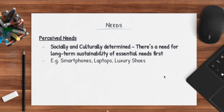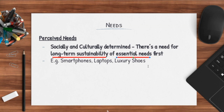Now we move on to perceived needs. Perceived needs are essentially socially and culturally determined, whereby there's a need for long-term sustainability of essential needs first. What it means is that before perceived needs can come into play, you have to first realize that your essential needs must be met. For instance, there's no way I can afford a smartphone or a laptop without having a job — because without a job, I don't get income, I don't have money to spend, and I can't afford a laptop or an Adidas shoe.